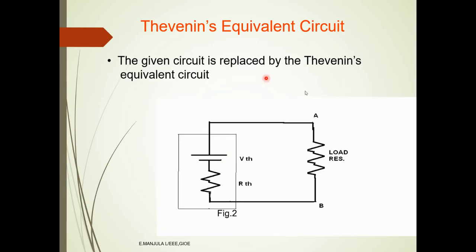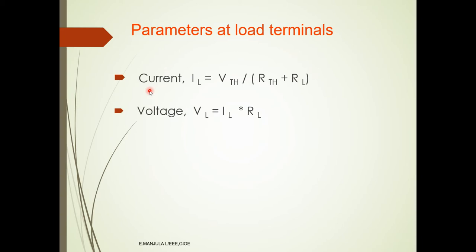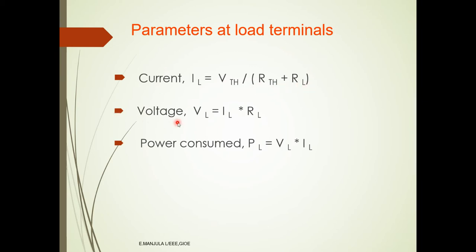This is the Thevenin's equivalent circuit. The given circuit is replaced by the Thevenin's equivalent circuit. The parameters at the load terminals are: the load current Il equals Vth divided by (Rth plus Rl); the load voltage Vl equals Il times Rl; and the power consumed Pl equals Vl times Il.